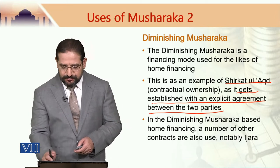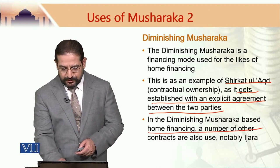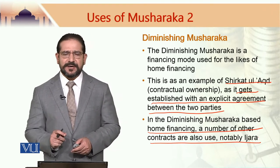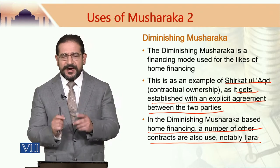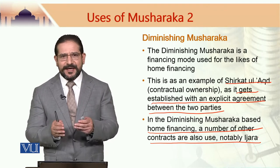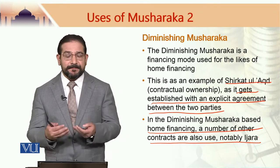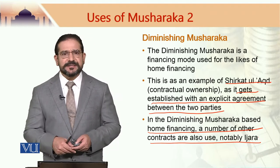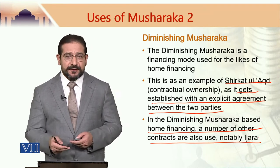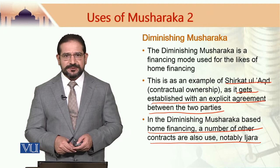In the Diminishing Musharaka-based home financing, a number of other contracts are also used, notably Ijara. Islamic modes of financing are not just one contract — these are arrangements which are composite in nature, meaning there is a possibility of using and combining many contracts. In the case of Diminishing Musharaka, two important contracts are used together: Musharaka (Shirkatul Aqt) and Ijara.